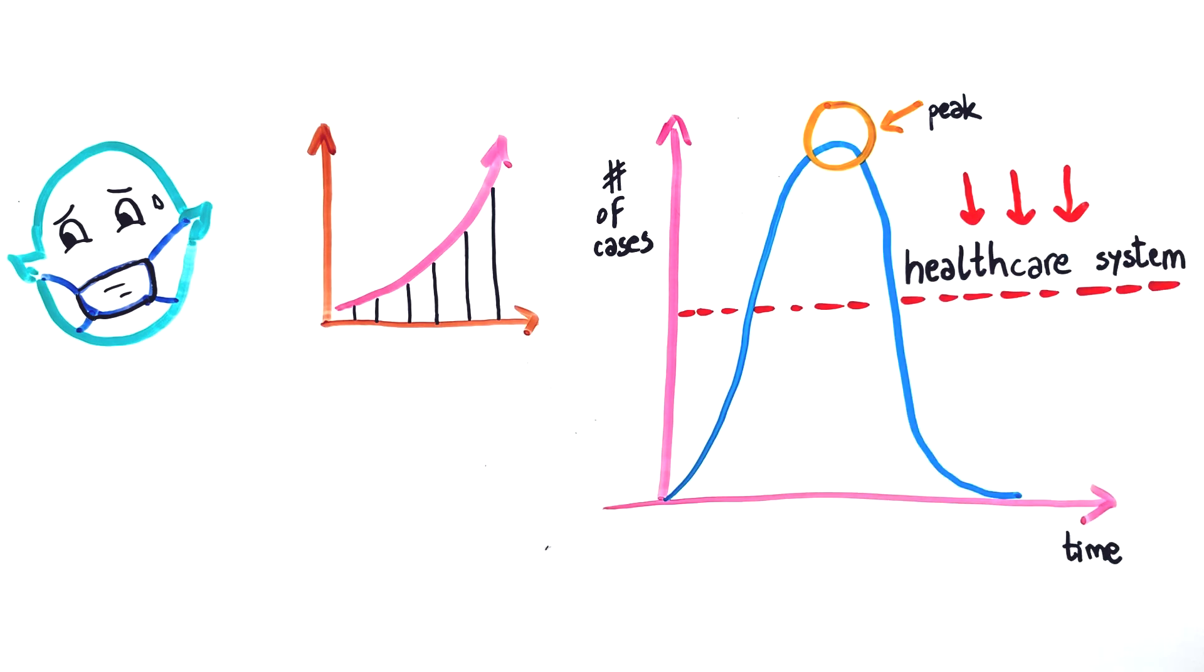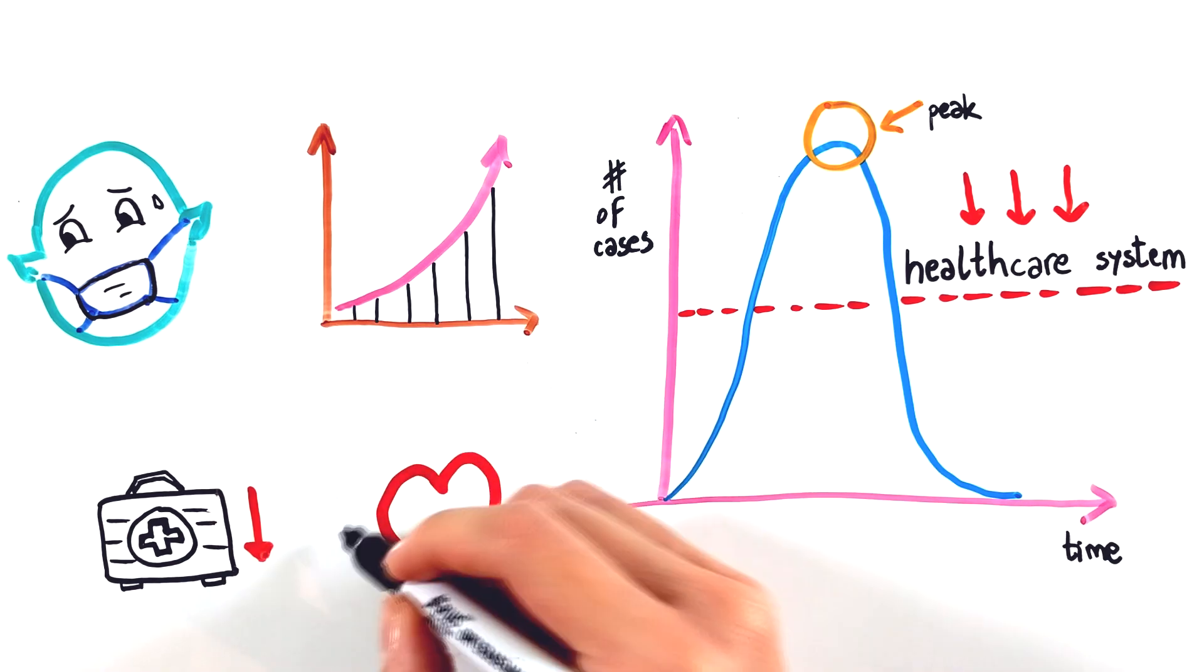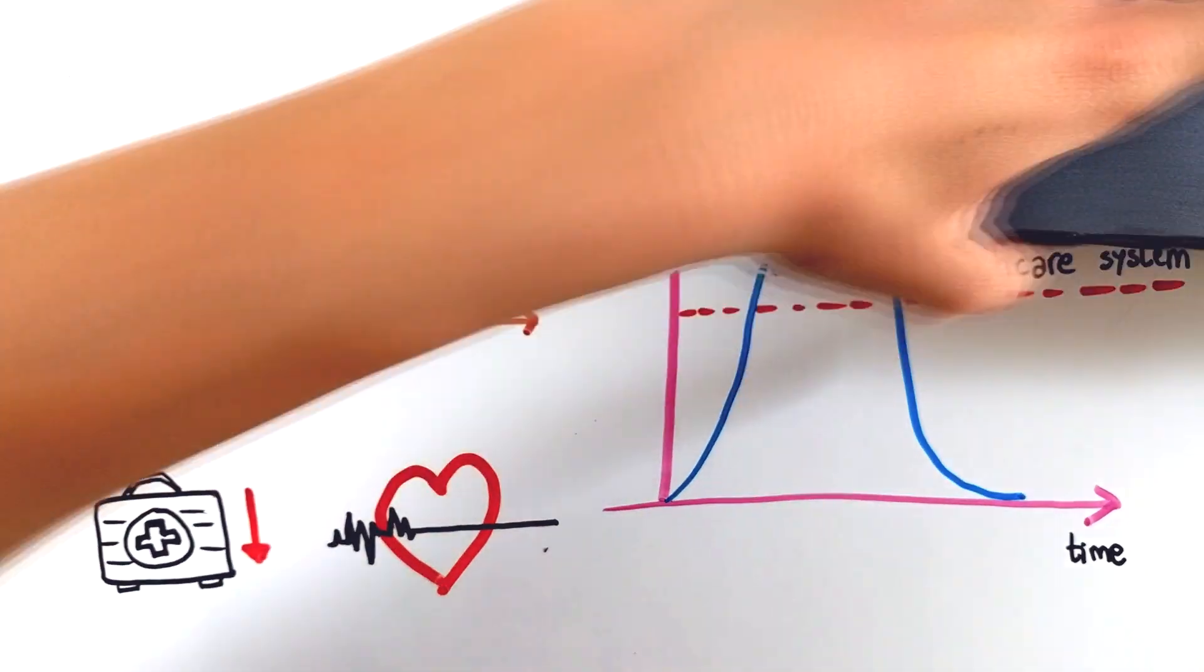As the number of infected people continues to rise, the capacity of the healthcare system decreases. As a result, hospitals are overwhelmed, medical assistance cannot be provided to a large number of patients at the same time, leading to a lower chance of survival and more deaths.